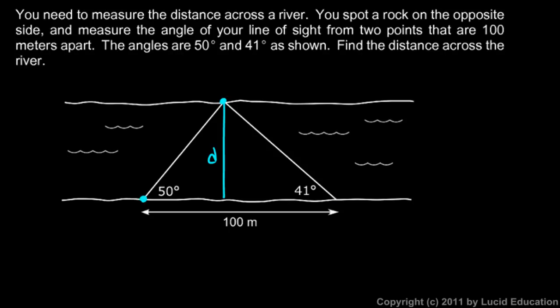The angles that we measure from this point over to the rock, our line of sight makes a 50 degree angle with the shore. And from this point over to the rock, we have a 41 degree angle to the shore. And we want to find distance D.